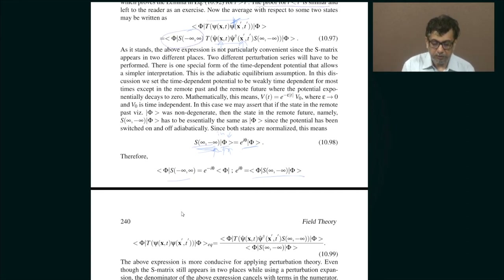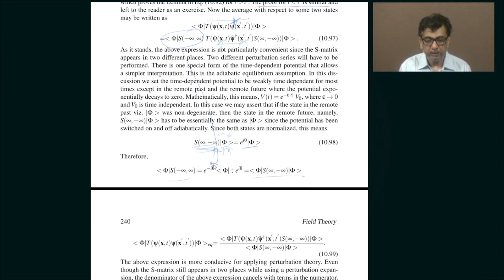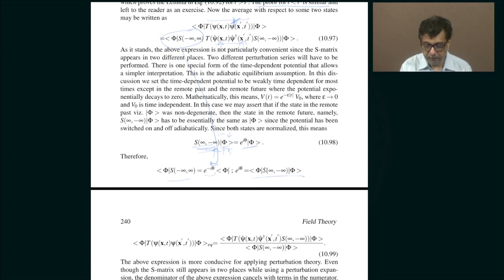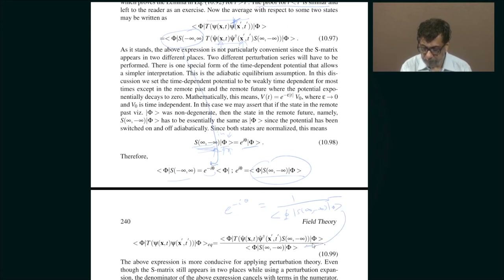Now look at this part: this is nothing but e^{-iθ} times phi. So what is e^{-iθ}? It is 1 divided by the expectation value of phi, S(∞, -∞), phi — which is basically 1 over the expectation value of S.